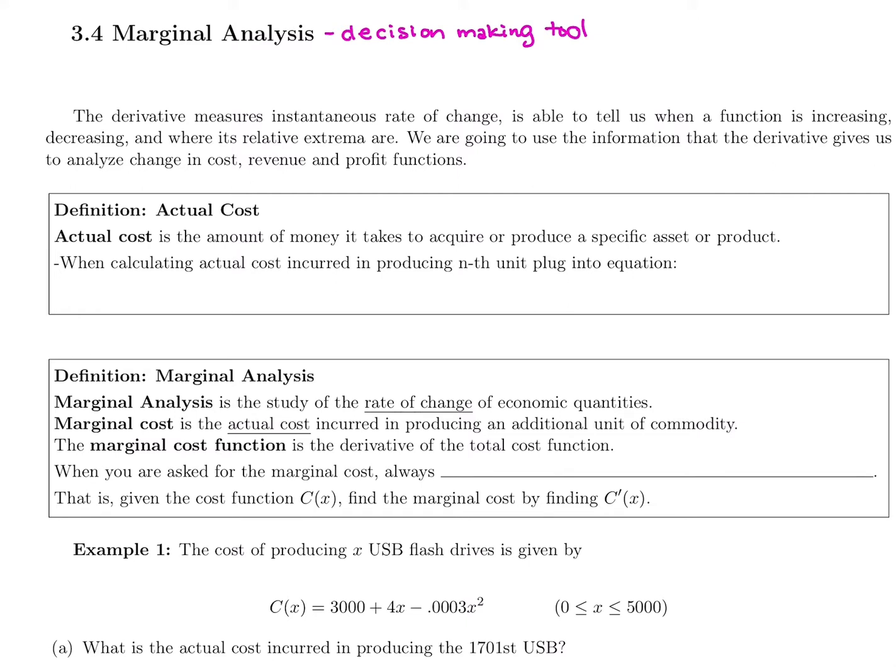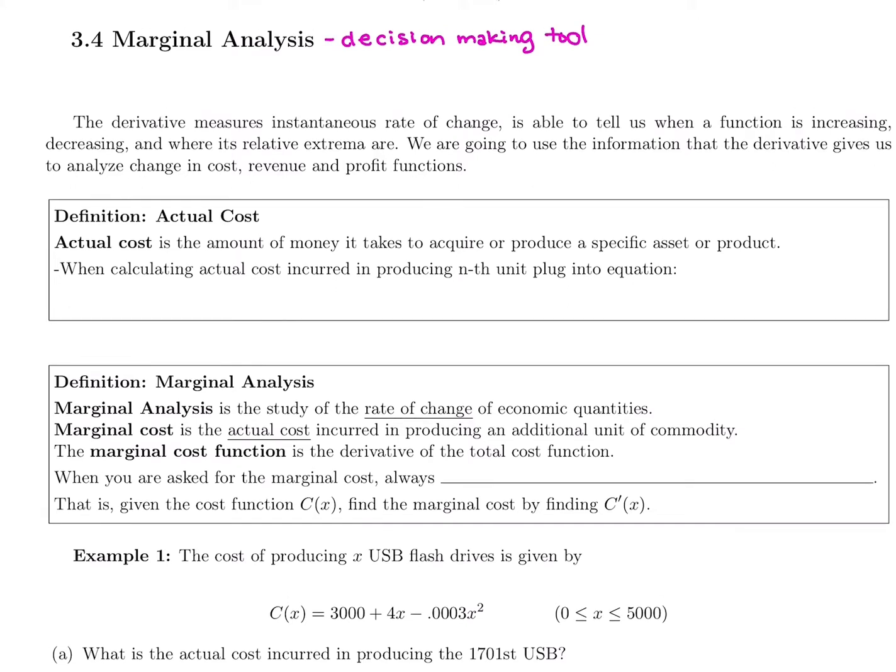When calculating actual cost for the nth unit, the formula you plug into is, first you find the total cost for producing all n units, so C(n). Say we want to make 50 units and that costs us $100. We're going to then subtract C of the number before.